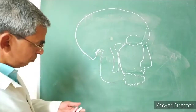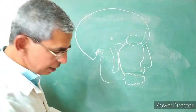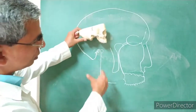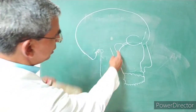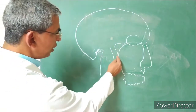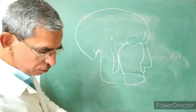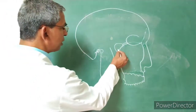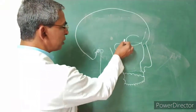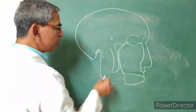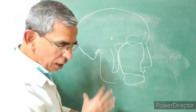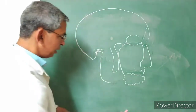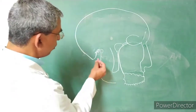Looking at a rough lateral view of the skull, this is the pterygomaxillary fissure, and this pterygomaxillary fissure opens into the pterygopalatine fossa. Now let's look at the parts of the artery.